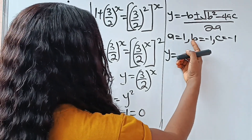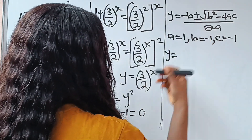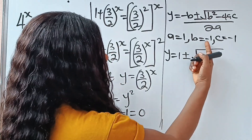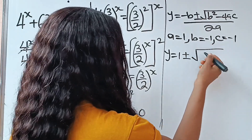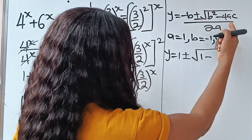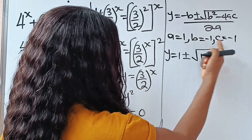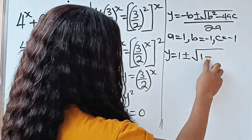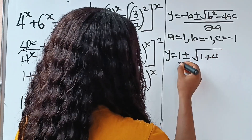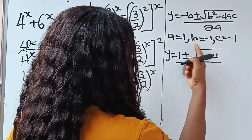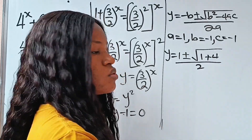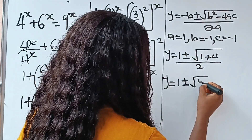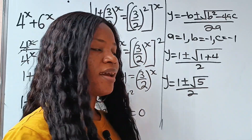We now have that y equals: our b is minus 1, so minus minus becomes plus, giving us 1, plus or minus the square root of b squared — that is minus 1 squared, which gives us 1 — then minus 4 times a times c, that is 4 times 1 times minus 1, which gives us minus 4. So minus 4 multiplied by this minus becomes plus. Divided by 2 times 1, that is a, gives us 2. So y equals 1 plus or minus square root of 5, divided by 2.